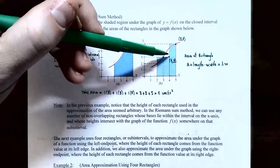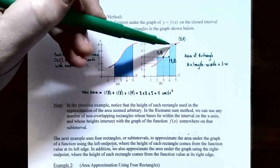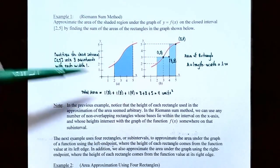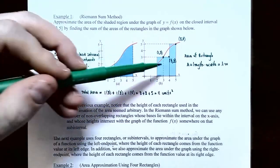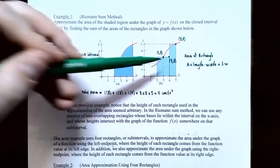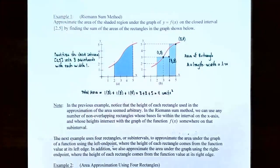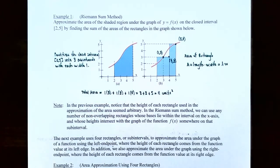We have some area under the curve that we're not counting, but also some area above the x-axis that we're counting accidentally. The area of a rectangle is length times width. The first rectangle has width 1 and height 3, so its area is 1 times 3. The second rectangle is also 1 times 3. The last rectangle has width 1 and height 5, so its area is 1 times 5. Adding these up: 3 plus 3 plus 5 equals 11 square units.